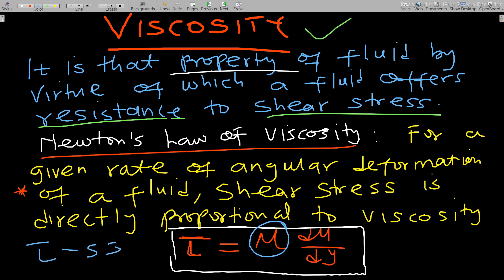In the formula, tau is the shear stress, mu is the viscosity, u is the velocity, and y is the dimension in which the fluid is moving — here we consider the fluid moving in one dimension. The differential du/dy is what we call the shear strain rate.